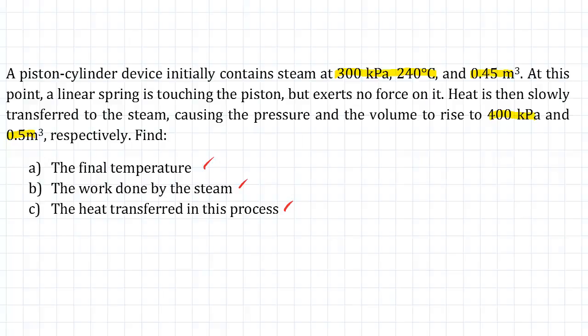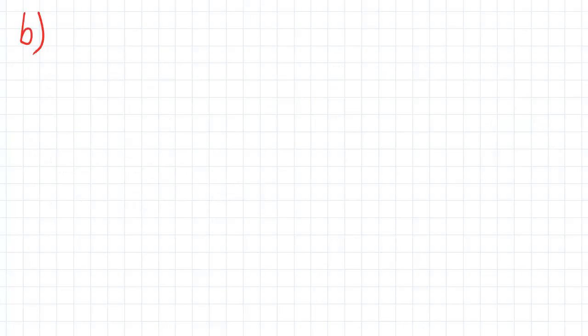So now to look at the work done by the steam in this situation, we need to look at our fundamental property of work, which is the integral of P dV. And through calculus, this just means that if we have a pressure and volume diagram, the work is just going to be the area underneath the curve.